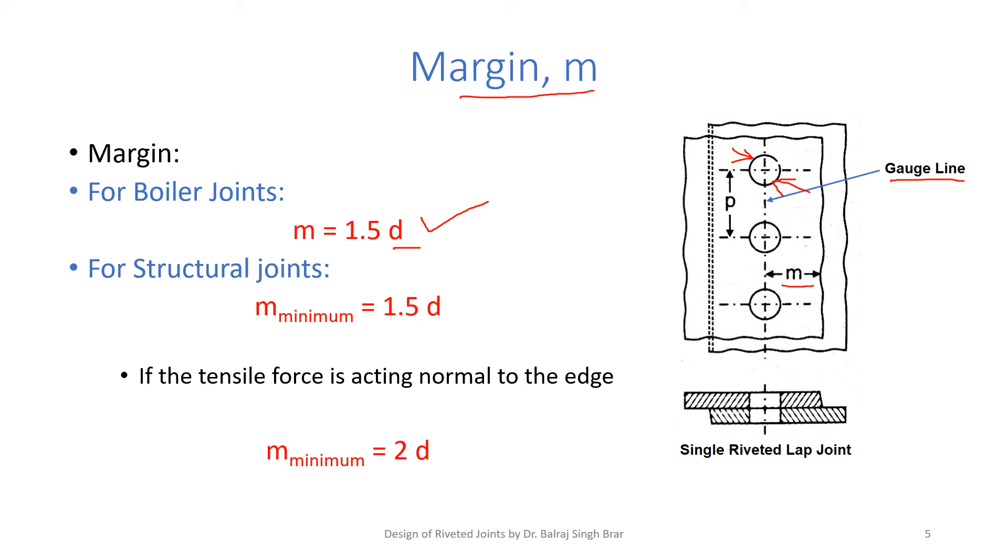For the case of structural joints, there is no chance of leakage. So margin can be safely increased beyond 1.5 D, and we say minimum margin should be 1.5 D.